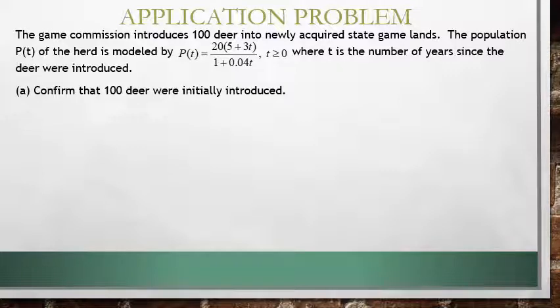Confirm that 100 deer were initially introduced. To do that, they're wanting us to actually figure out when t is 0, so when no years have passed since the deer were introduced. When our t value is 0, we're wanting to make sure this function is going to give us a value of 100.